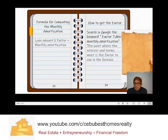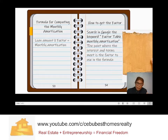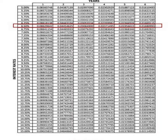You can search in Google the keyword 'factor table monthly amortization.' The point where the interest and terms meet is the factor to use in the formula.